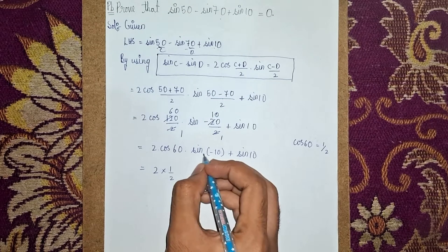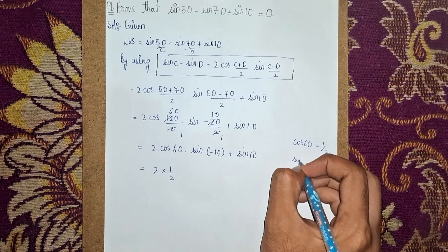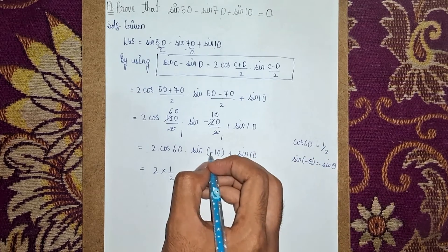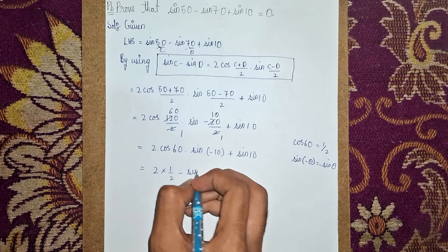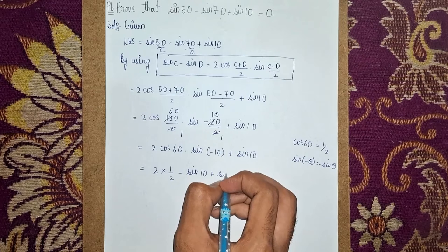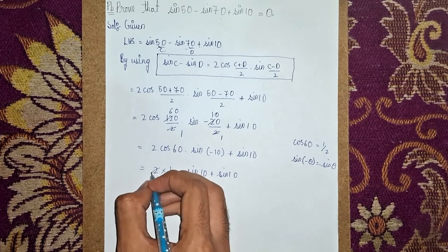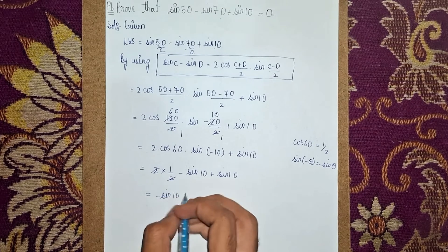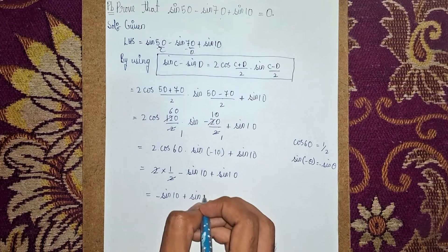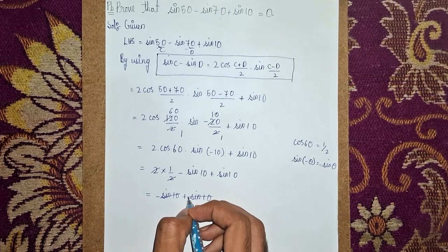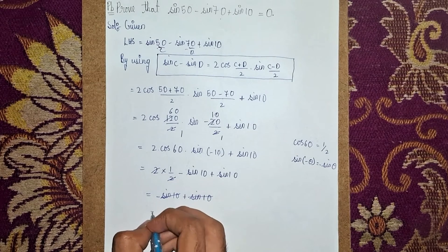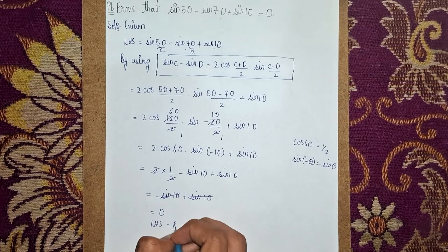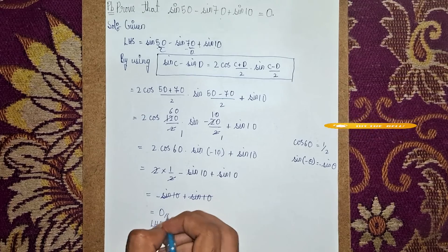Now using the trigonometric identity sin(minus theta) equals minus sin theta, this minus will come out, giving minus sin 10. So we have: 2 times 1 over 2 times minus sin 10, plus sin 10. The 2 and 2 cancel, leaving minus sin 10 plus sin 10, which equals zero. Hence proved: LHS equals RHS.